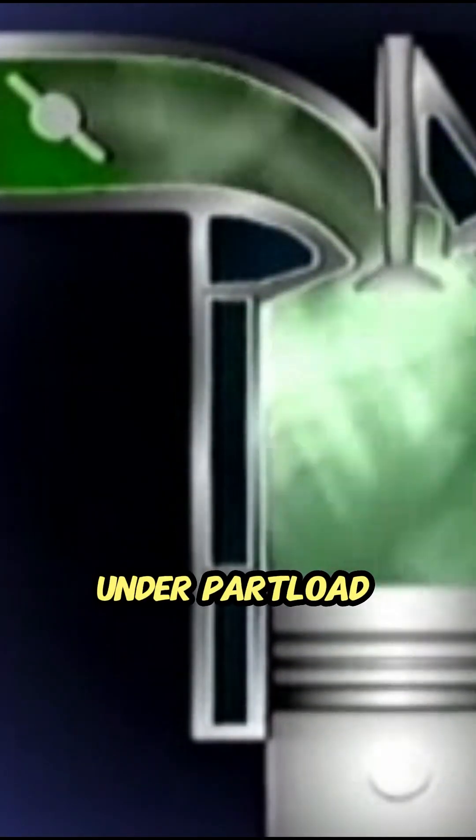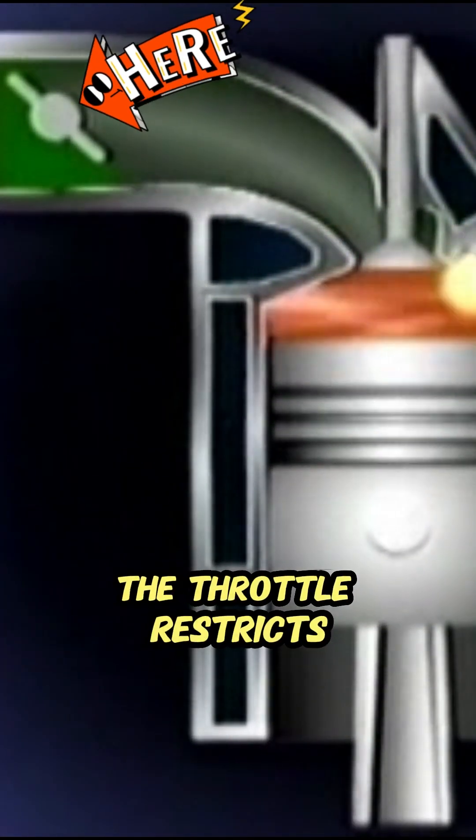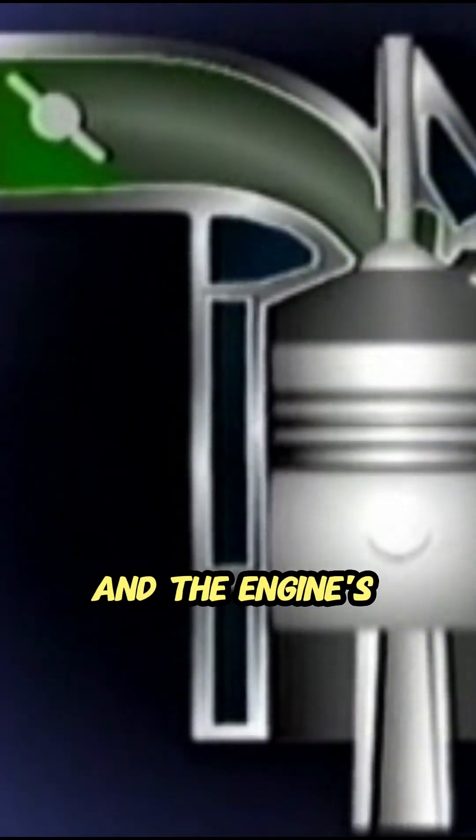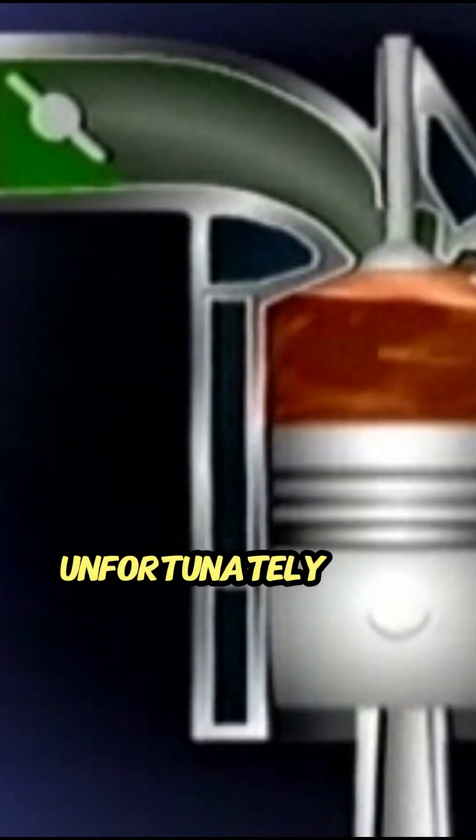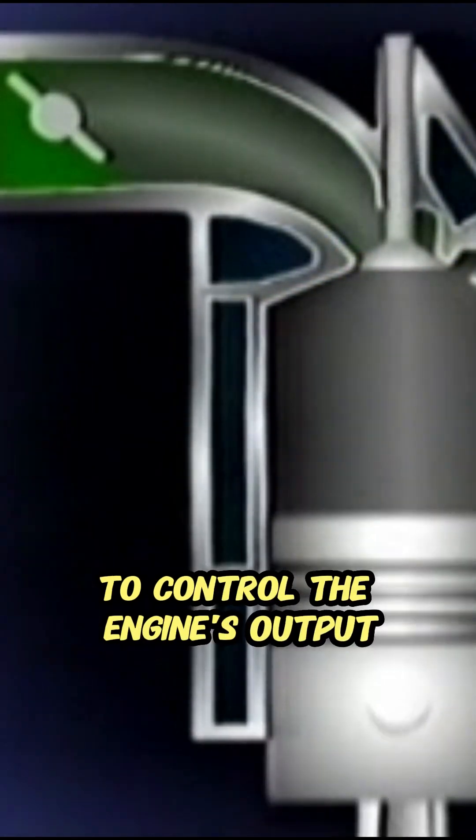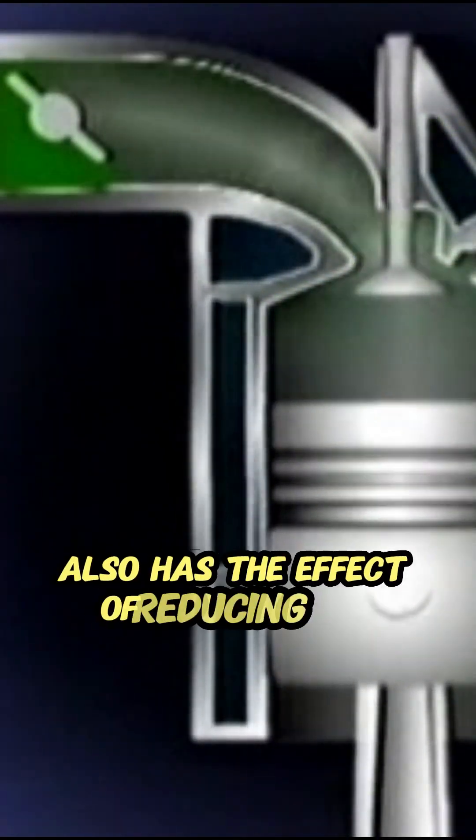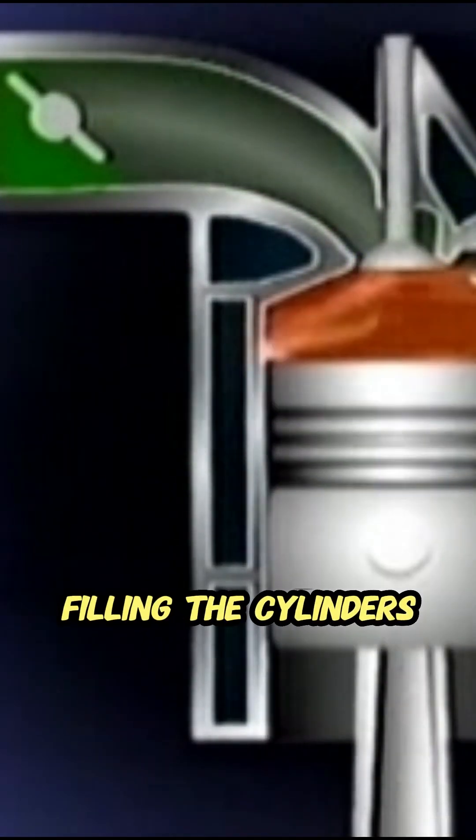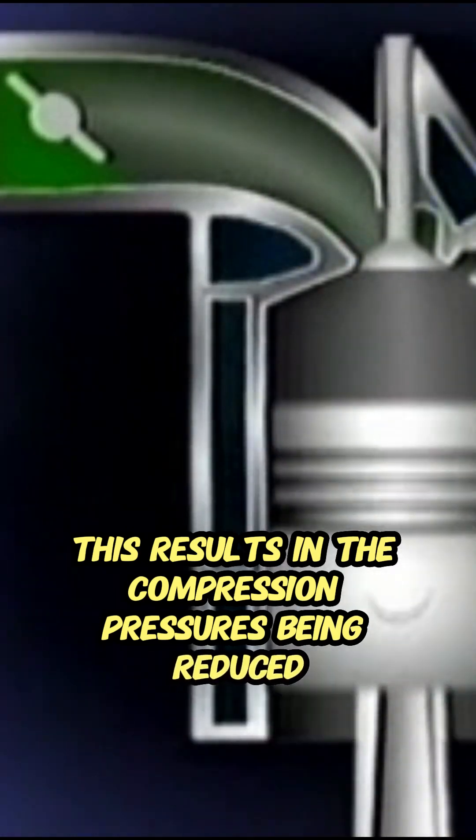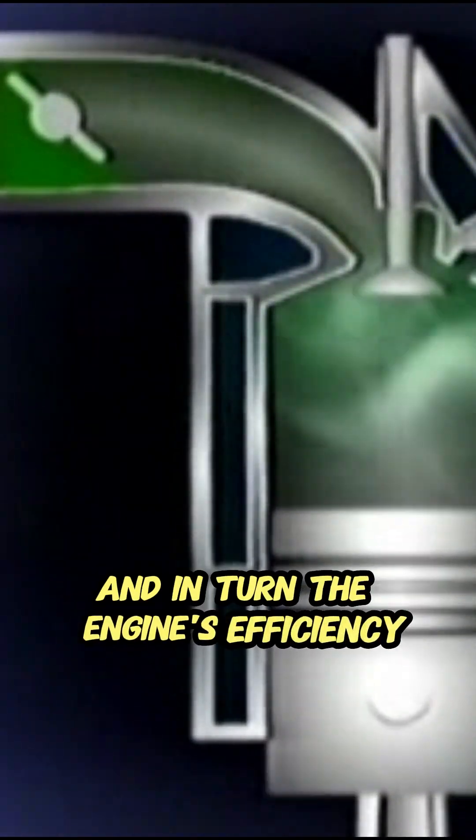Under part load conditions, the throttle restricts the quantity of mixture flowing into the cylinders and the engine's output is reduced. Unfortunately, this throttling of the intake to control the engine's output also reduces the volume of mixture filling the cylinders. This results in the compression pressures being reduced and, in turn, the engine's efficiency.